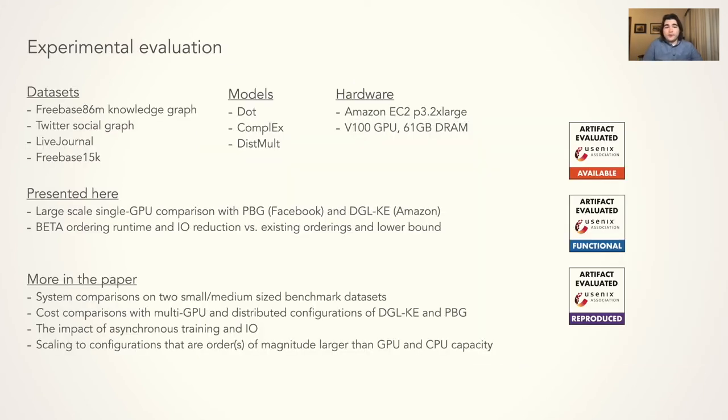We evaluate MARIUS on a number of standard benchmark datasets and graph embedding models using the P32X large instance on AWS. But due to time constraints, we only will cover two experiments: the single GPU training comparisons with the baseline systems on large scale Twitter and Freebase86M datasets, and then we compare the BETA ordering runtime and I/O reduction versus existing orderings and the lower bound. Our paper contains a more comprehensive evaluation. And as shown by these artifact evaluation badges, our GitHub repository contains detailed instructions on reproducing all of our results.